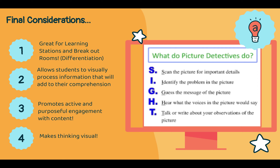The CITE strategy is great for learning stations and breakout rooms and is a great way to differentiate. It's important to explicitly teach students that CITE is an acronym — having this on a Google Classroom wall or as an anchor chart in the actual classroom or on the desks. This strategy also allows students to visually process information, adding to their comprehension before making connections at the end of a lesson. It promotes active and purposeful engagement with content and makes thinking visible.